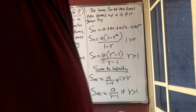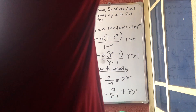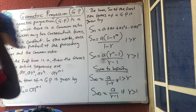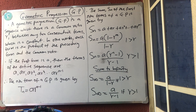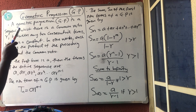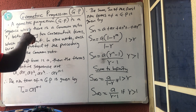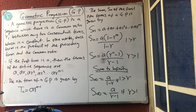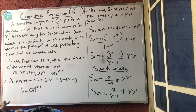Good evening and welcome to Master Talker online class. Today we'll be talking about sequences — specifically geometric progression. A geometric progression is a sequence which has a constant common ratio between two preceding terms. The ratio between two terms must be the same.